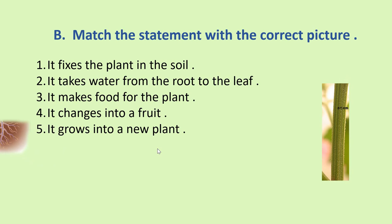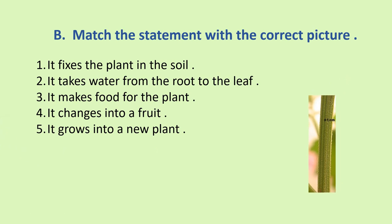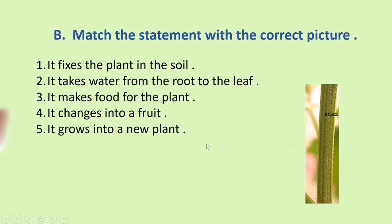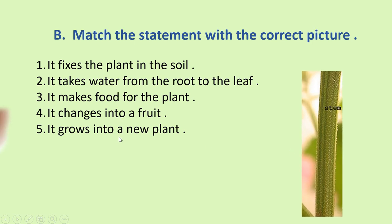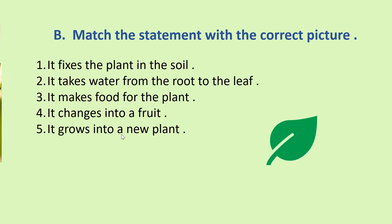Now, second point, it takes water from the root to the leaves. What is it? It is a stem. This is called stem. Now, third point, it makes food for the plant. The answer is leaves.